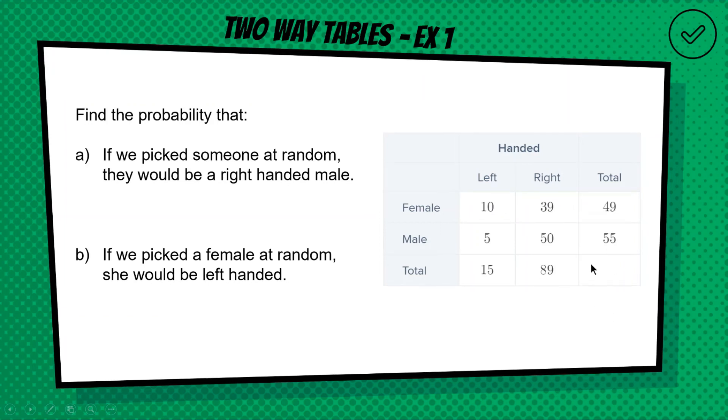And then for the corner down here, you can either do the total this way or the total this way. No matter which way you go, you should get the correct answer of 104, which means that in total we asked 104 people. So if we pick someone at random, we'll be picking one of the 104 people. And how many of those are right-handed males? Right-handed males is the 50. All right, so our probability is going to be 50 out of a total of 104.